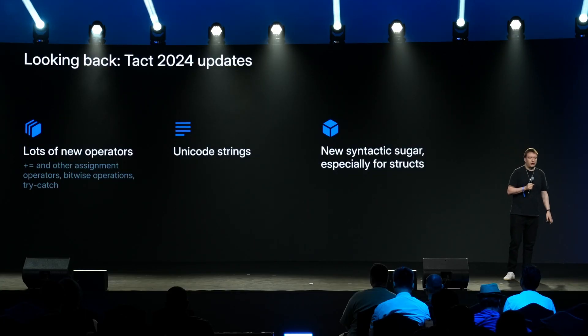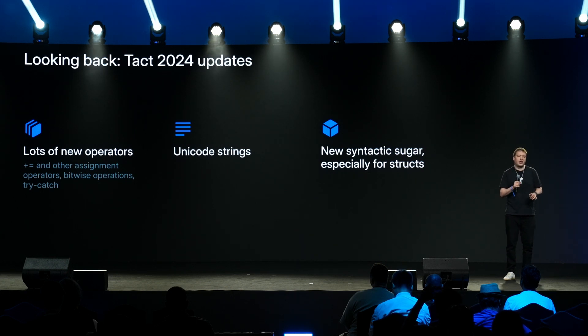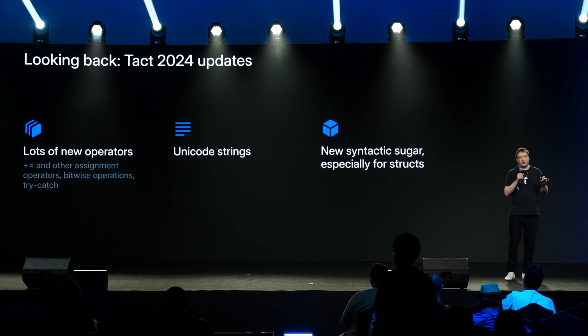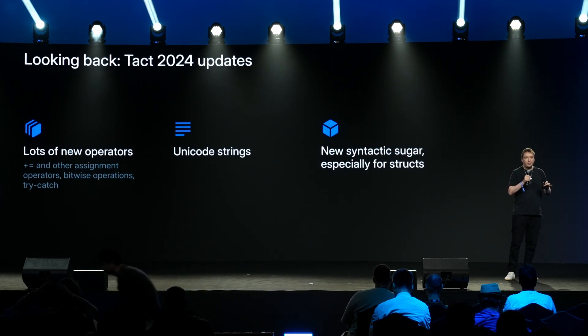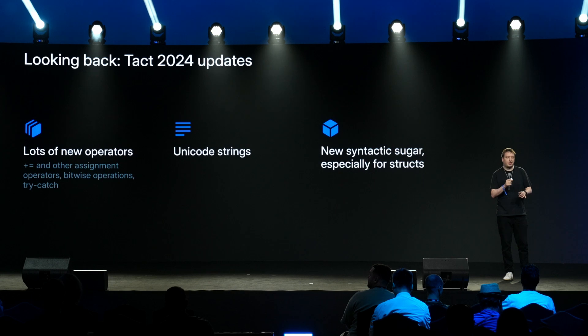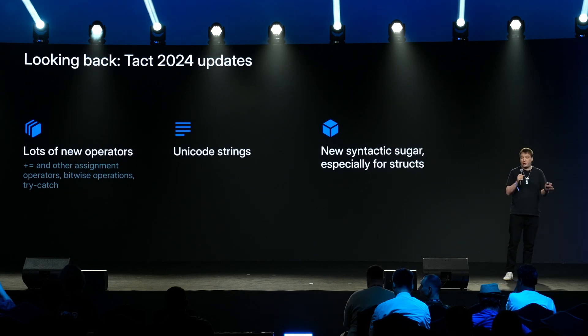There are at least two projects using TACT in production: PixelSwap and Gas Pump. TACT is a language, and we added a bunch of new features like assignment operators and try-catch statements — kind of catching up with the FUNC compiler. We also provide lots of higher-level components like Unicode strings and new syntactic sugar for structures.